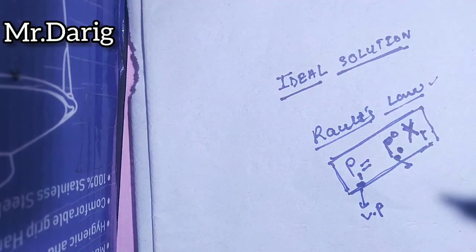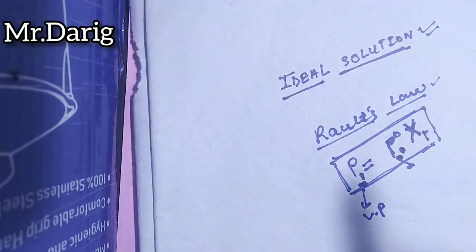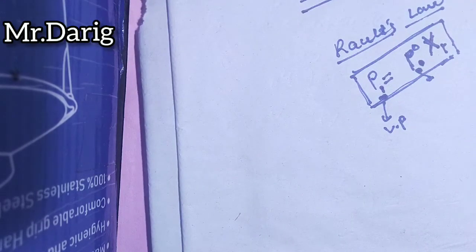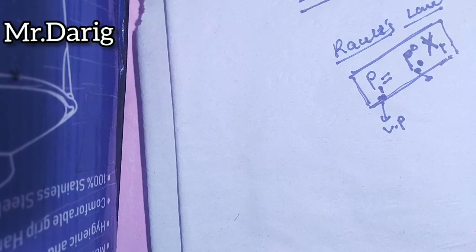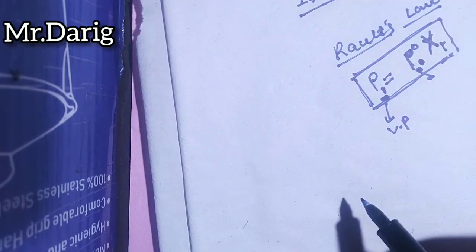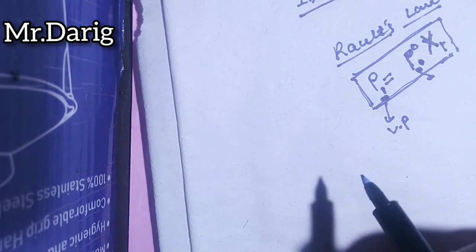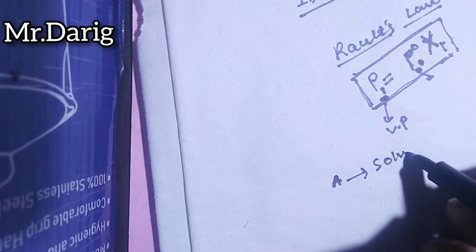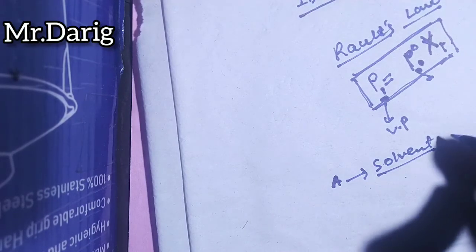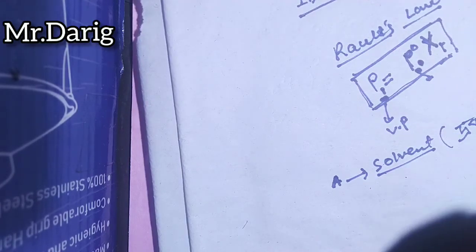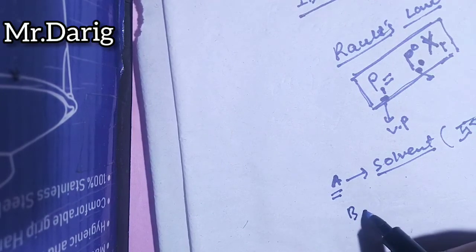If we use this rule, we use the ideal solution. So, this is our ideal solution. Let's say A denotes the solvent.